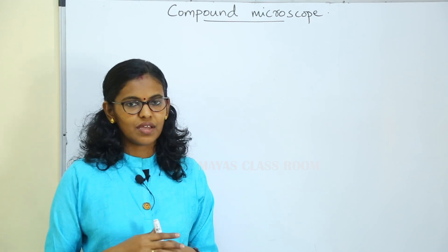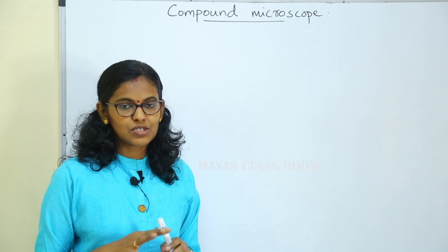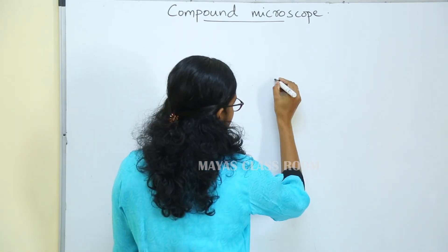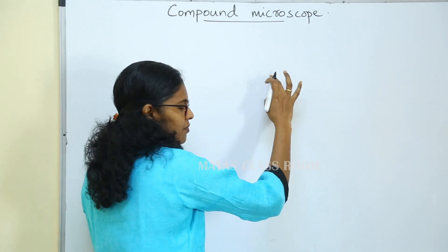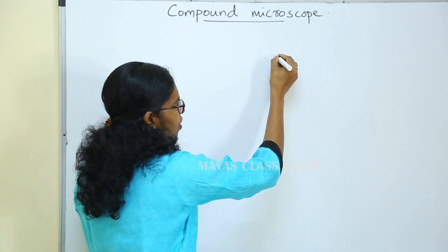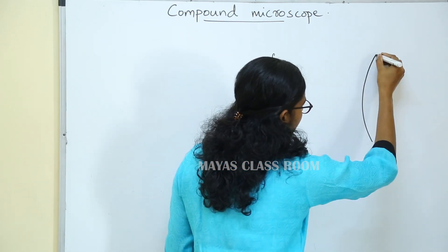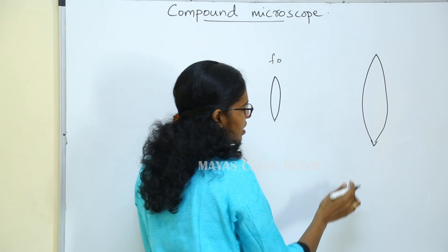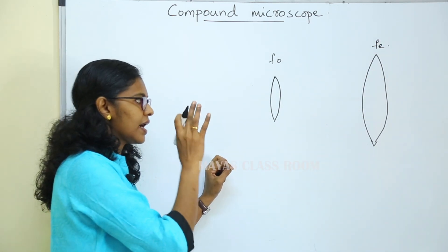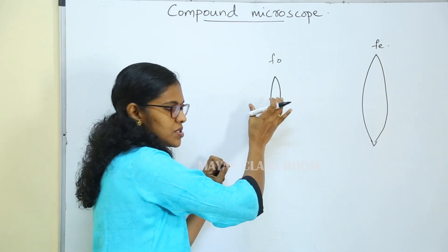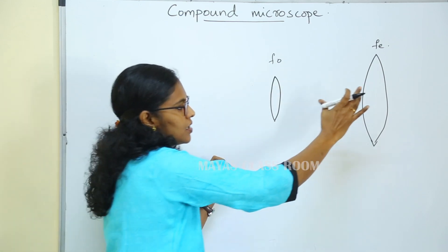How do we know about the magnification of the compound microscope? We have two convex lenses, each with a focal length. The first lens is the objective lens, which forms an image of the object. The second lens is called the eyepiece.